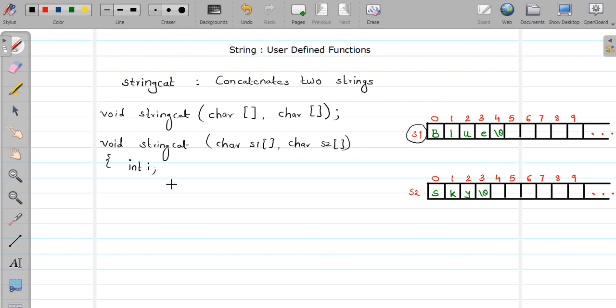For i will start with zero, s1[i] not equal to null, i++. I'll make i point at the 0th position, then I'm incrementing i till I get null at the i position of s1 string. My loop does not have any body, so I can put a semicolon here.